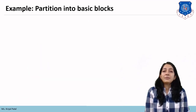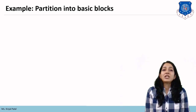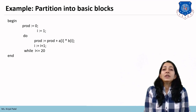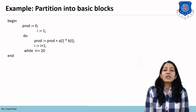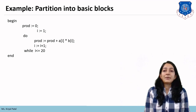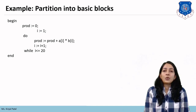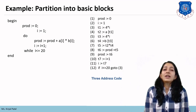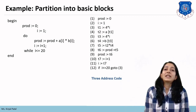Here is the example where we will use that method to partition a sequence of statements into basic blocks. The code is: production = 0, i = 1, do production = production + a[i]*b[i], i = i+1, while i <= 20. We want to convert this code into three-address code first, then partition that three-address code into basic blocks.